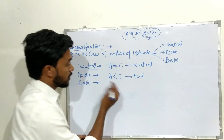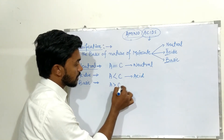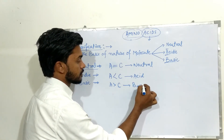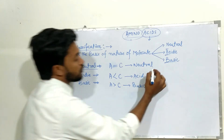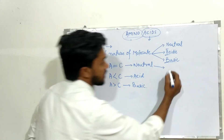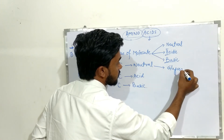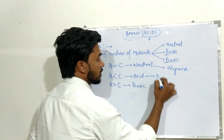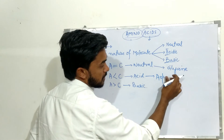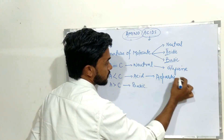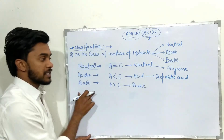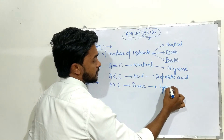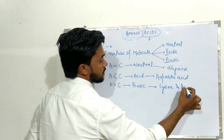If the amino content is greater than the acidic content, then the amino acid is basic in nature. For example, glycine is a neutral amino acid, aspartic acid is an acidic amino acid, and lysine and arginine are examples of basic amino acids.